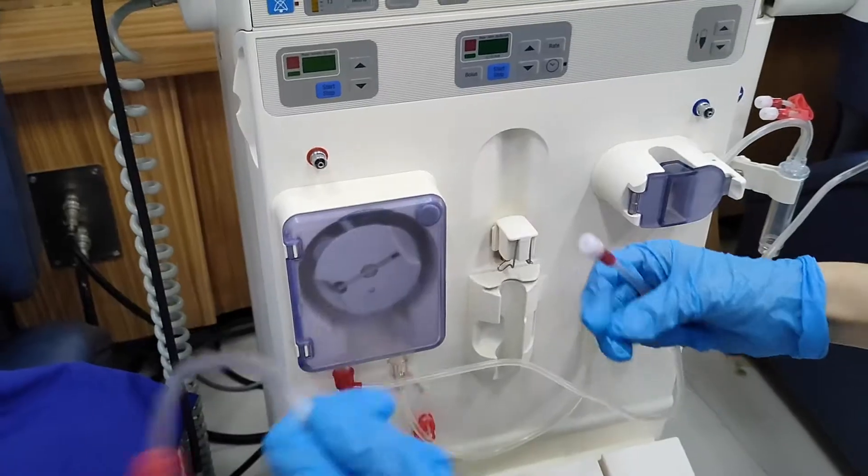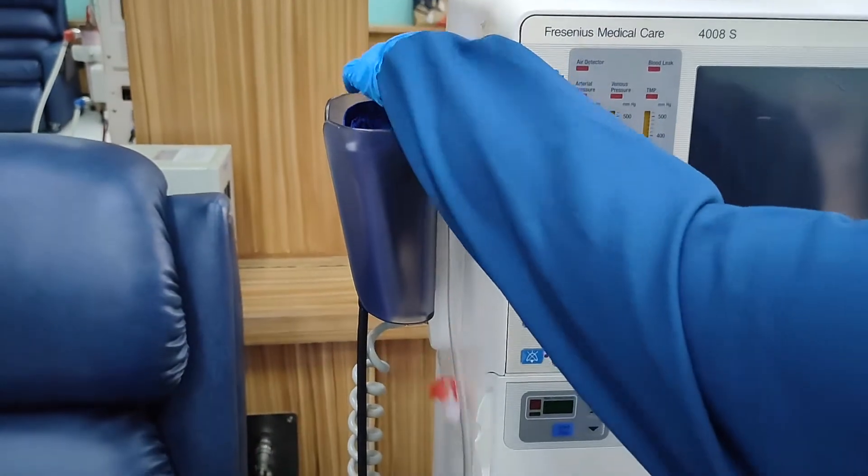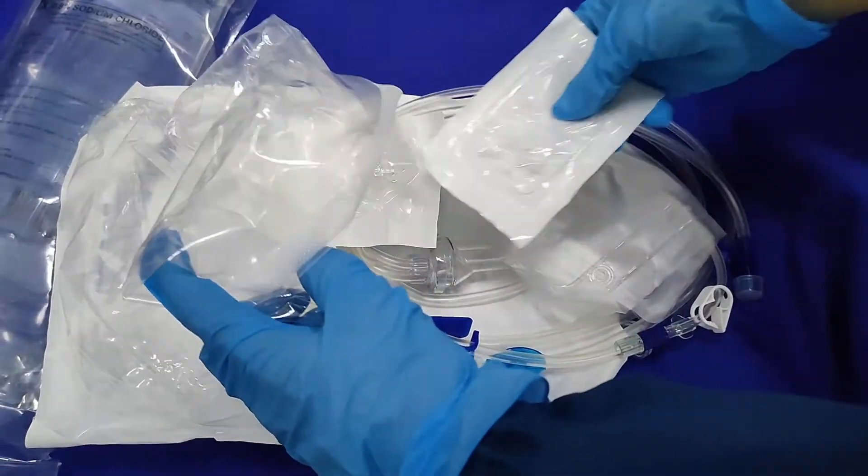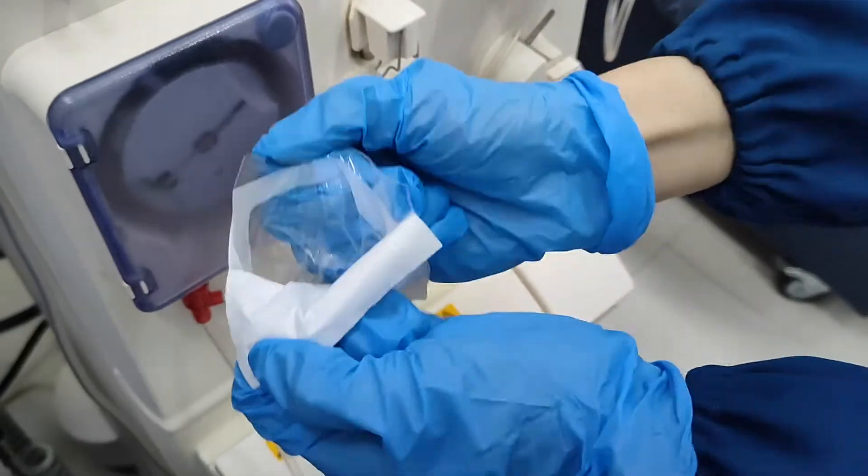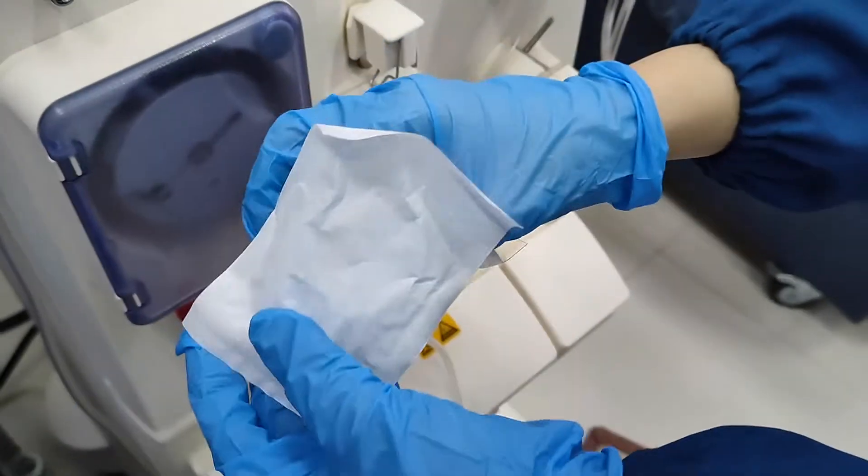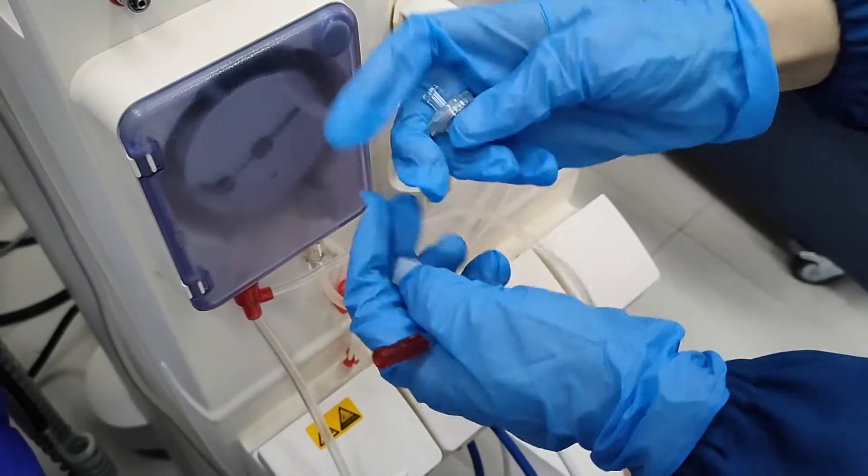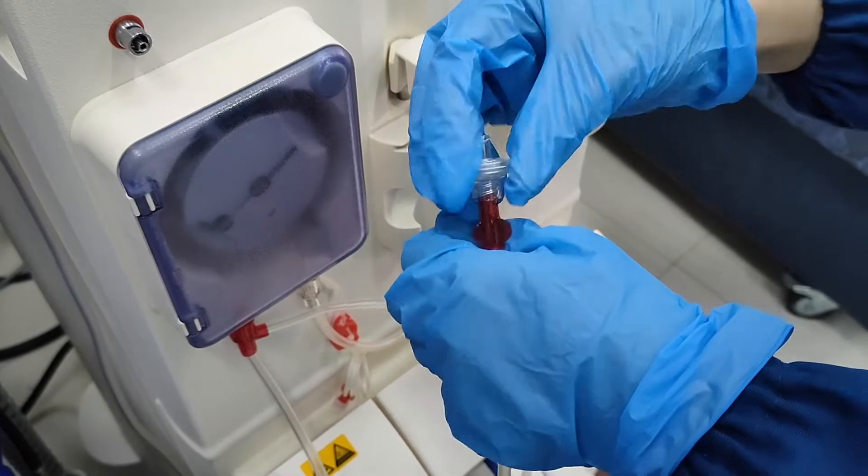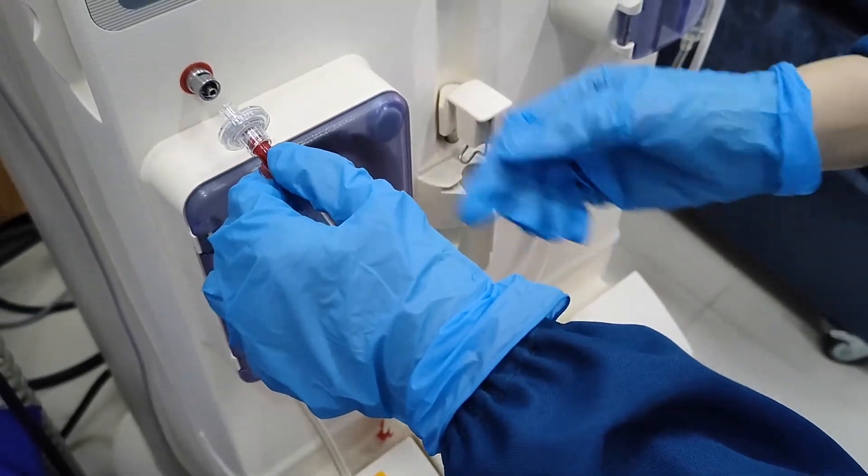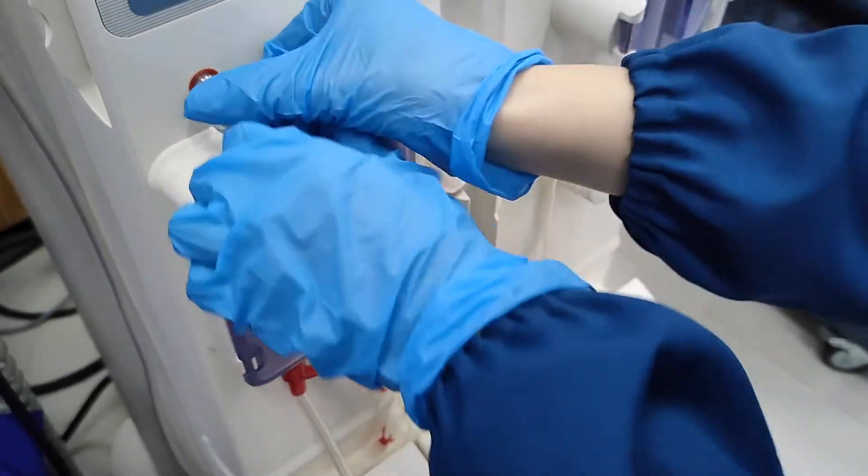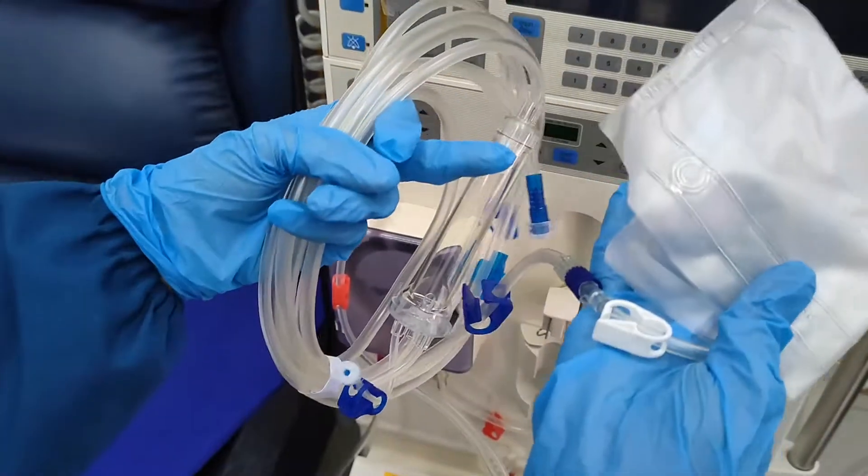Then, temporarily set aside the arterial end. Next, get the transducer and attach it to the arterial transducer port. Then, connect it to the arterial pressure sensor and make sure that it is secured well.